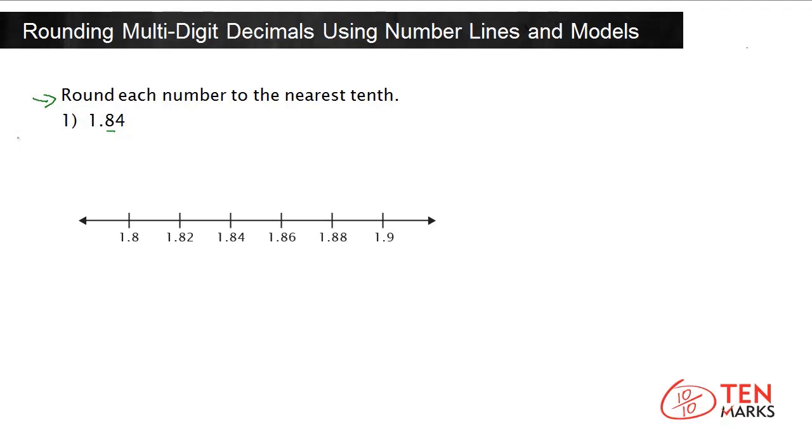Here is our number line. Place 1 and 84 hundredths on our number line. It lies between 1 and 8 tenths and 1 and 9 tenths. These are the closest tenths around it. You can see that 1 and 84 hundredths is closer to 1 and 8 tenths than it is to 1 and 9 tenths.